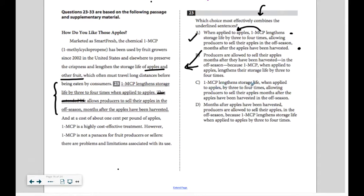1MCP lengthens storage life when applied to apples by three to four times, allowing producers to sell their apples months after the apples have been harvested in the off-season. So they reworded the whole thing.